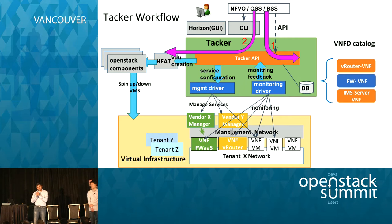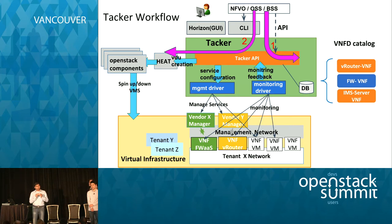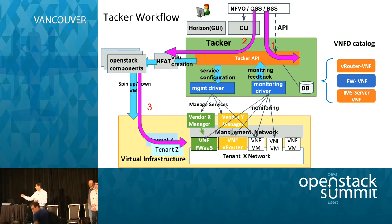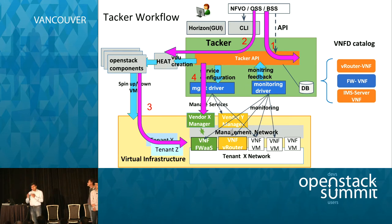Tacker provides an API to actually stand up a VNF. The default is we are currently using Heat, and through Heat we want to leverage as many OpenStack components as possible — we don't want to redo any of the work that's already there. Heat in turn will launch the VM or VMs backing the VNF. Now the VM is up — but we don't want to stop there.